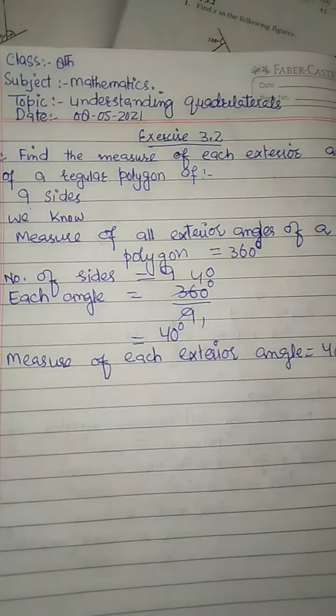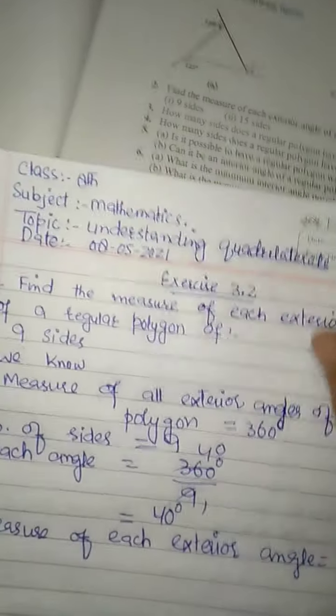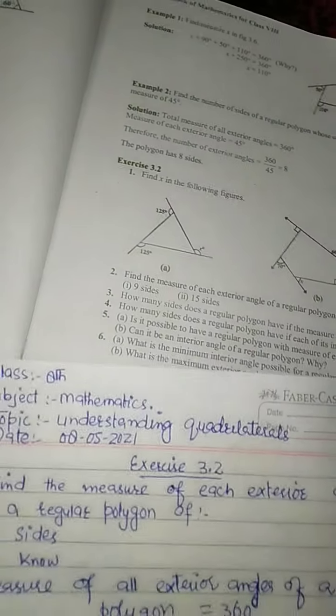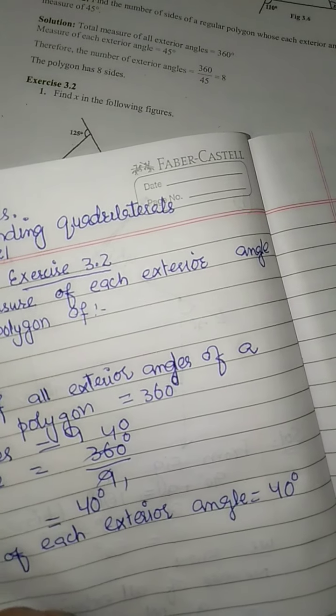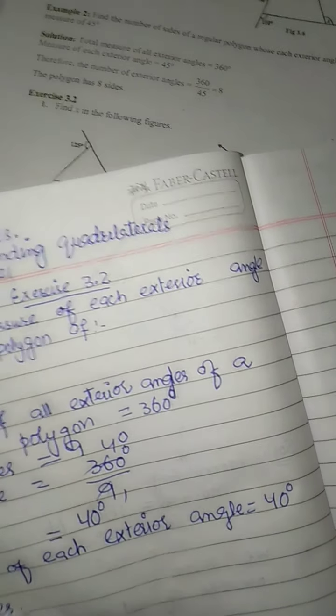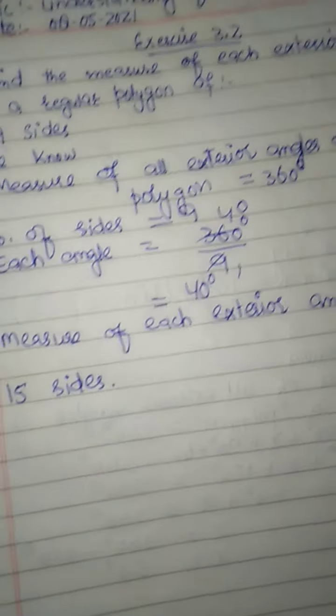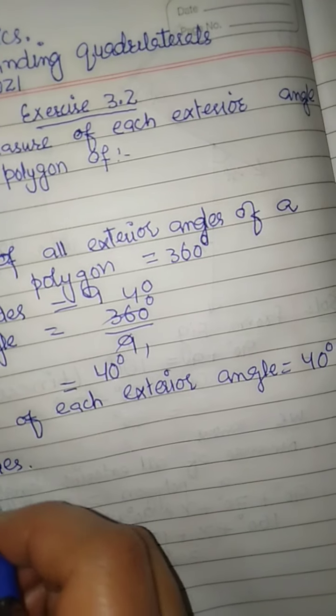Now for part B, we have 15 sides. This is also a regular polygon. We need to find the measure of each exterior angle.